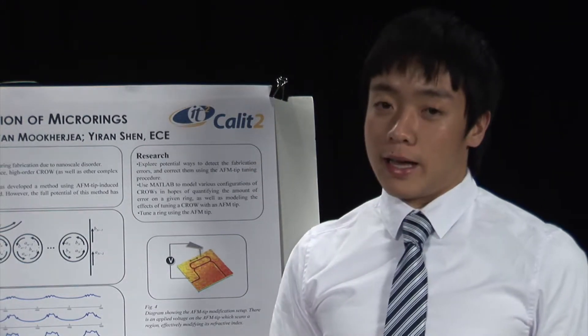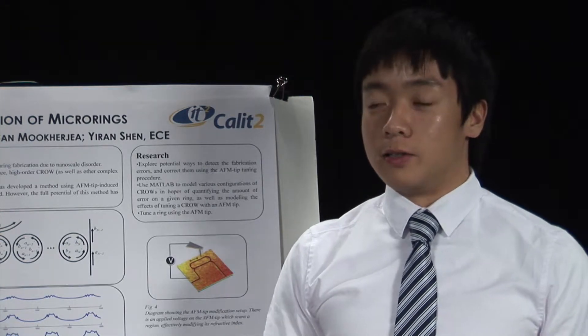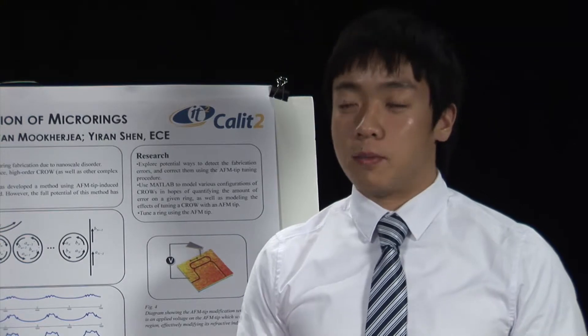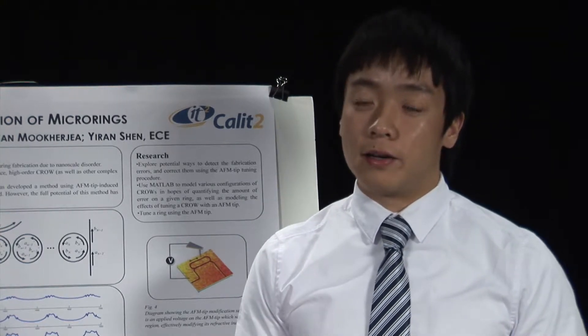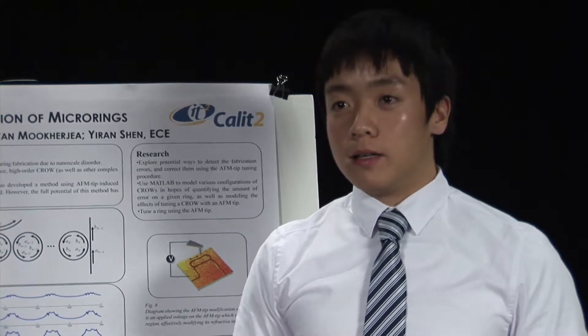There's hope, however, as the micro nanophotonics group here at UCSD has developed a way to tune micro rings using an AFM tip. And so my project was to look more into this to see if it's possible to quantify and locate error in the CROW as well as potentially correct these errors using the AFM tip.